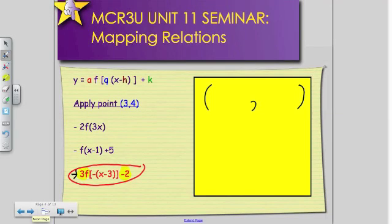So 3F, square brackets, negative bracket X minus 3, close your square brackets, minus 2.